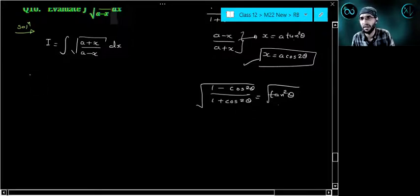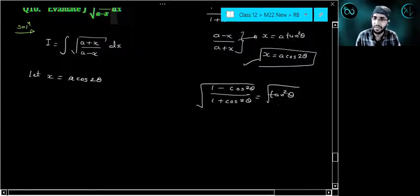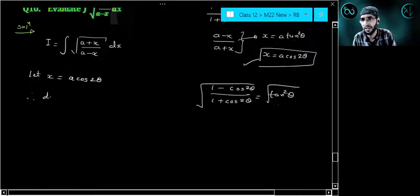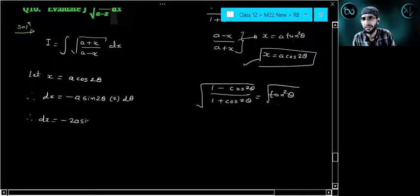The next step is to find its differential. dx is equal to minus a cos 2 theta, so the differentiation is minus sin 2 theta times the differentiation 2 d theta. Therefore dx is equal to minus 2a sin 2 theta d theta.